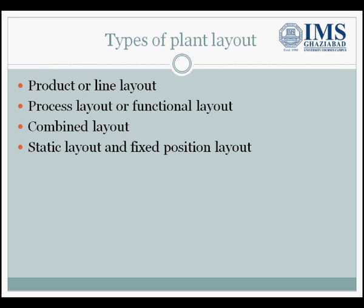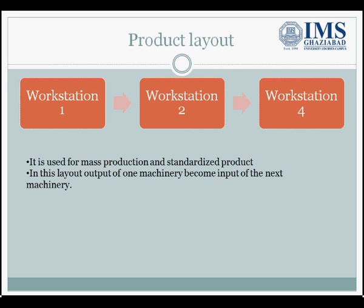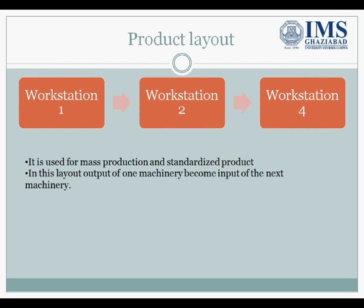The first layout is product or line layout. The product layout involves the arrangement of machines in one line depending upon the sequence of operations. Product layout is usually suitable for assembling operations — for example, in the automobile industry — where the material moves to another machine subsequently without any backtracking or deviation.